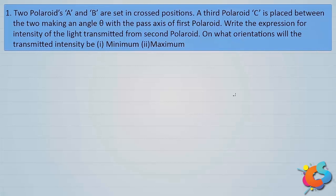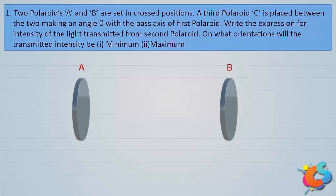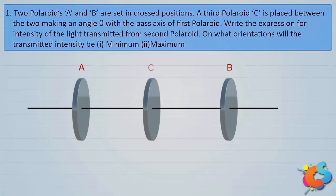Let's consider the two polaroids A and B. They are placed crossed with respect to each other, which means their pass axes are perpendicular to each other. There is a third polaroid C placed in between them such that its pass axis makes an angle theta with the first polaroid A. So the angle between A and C is theta, the angle between A and B is 90 degrees, and therefore the angle between B and C is 90 minus theta.